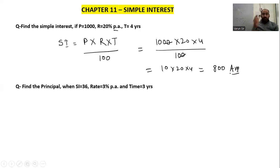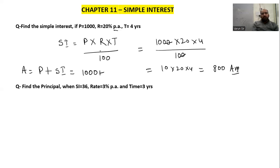So our Simple Interest is 800. If the question also asks for the Amount, then Amount equals Principal plus Simple Interest. The Principal we gave was 1000 and our interest is 800, so our Amount becomes 1800.